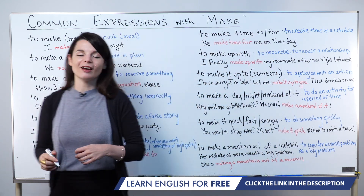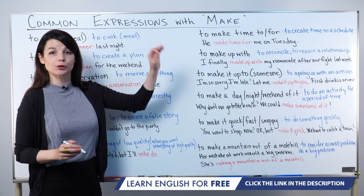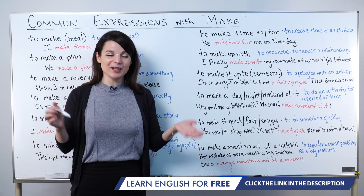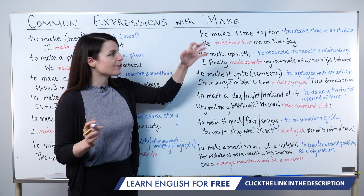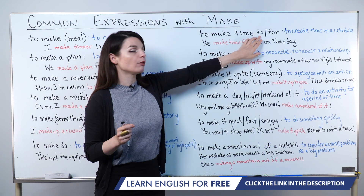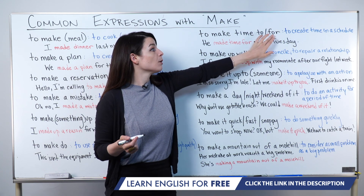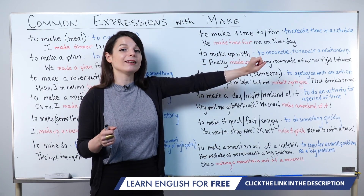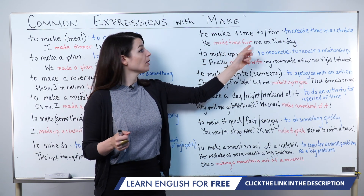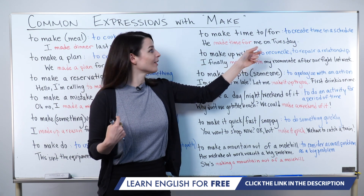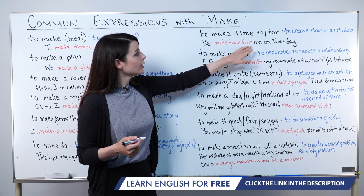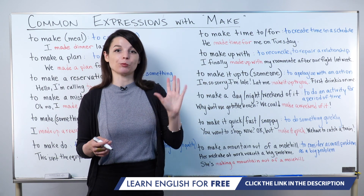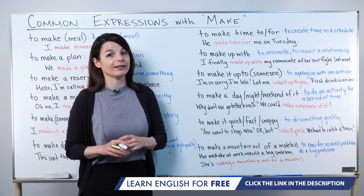The next expression is to make time to or to make time for. Both mean to find time in a schedule — of course we can't literally create time, but this means finding space in your schedule. We use 'to' before a verb in the infinitive form, and 'for' before a noun — a person or an activity. For example: he made time for me on Tuesday. 'For' is used here because 'me' is a noun. I could change it to: he made time to meet me on Tuesday. To make time for means to create time in a schedule.